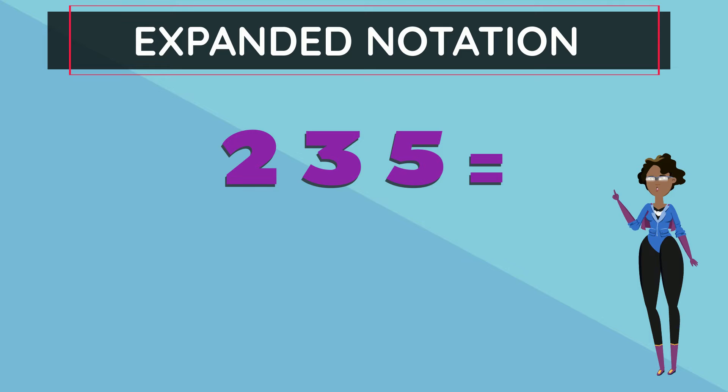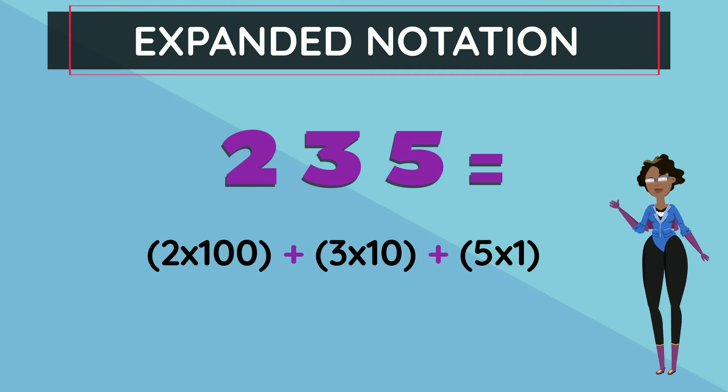235 written in expanded notation can also be 2 multiplied by 100 added to 3 multiplied by 10 added to 5 multiplied by 1.